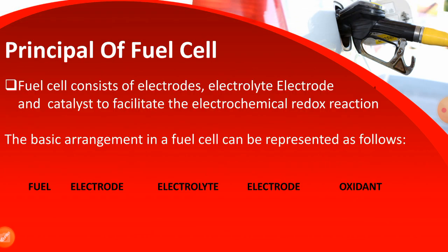Principle of the fuel cell: A fuel cell consists of electrodes, electrolyte, and a catalyst to facilitate the electrochemical redox reaction. The basic arrangement in the fuel cell can be represented as: fuel, electrode, electrolyte, electrode, and oxidant.